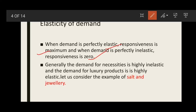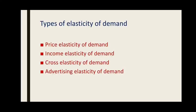Normally, demand for necessities is highly inelastic and demand for luxury products is highly elastic. For example, salt is a necessity — whether our income changes or the price of salt changes, its demand will not change much. But in the case of jewelry, if the price of jewelry changes or the consumer's income changes, its demand changes a great deal. So for luxury products, demand is highly elastic.